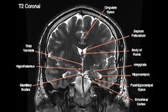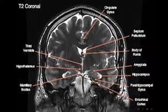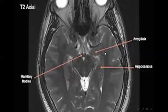This is a coronal T2 MRI. This is the cingulate gyrus, this is the amygdala, this is the hippocampus, and this is the mammillary body. This is a T2 MRI showing the hippocampus and the mammillary body.